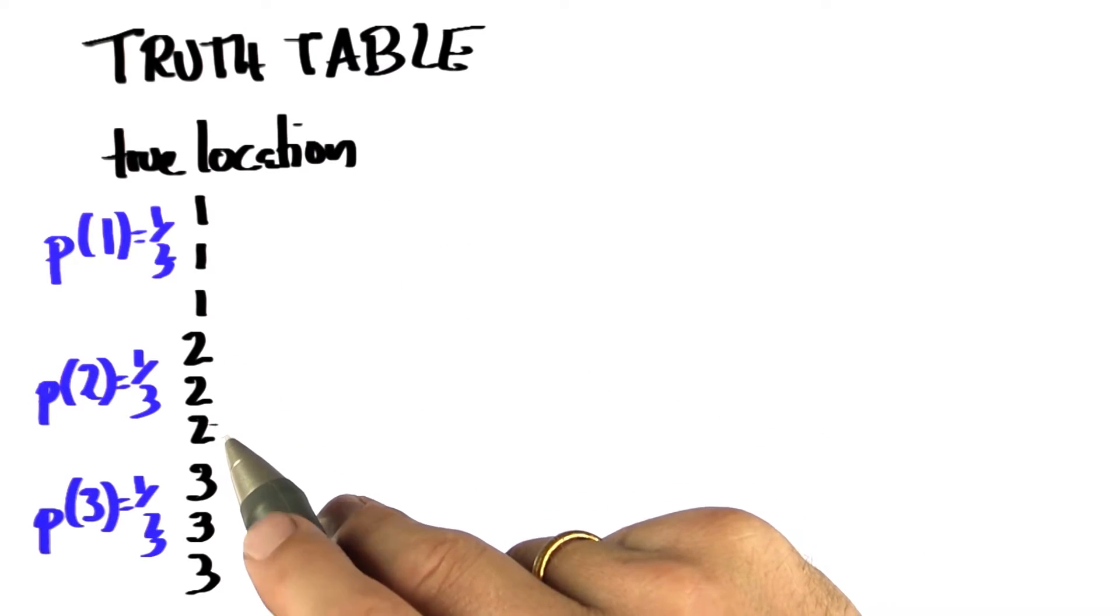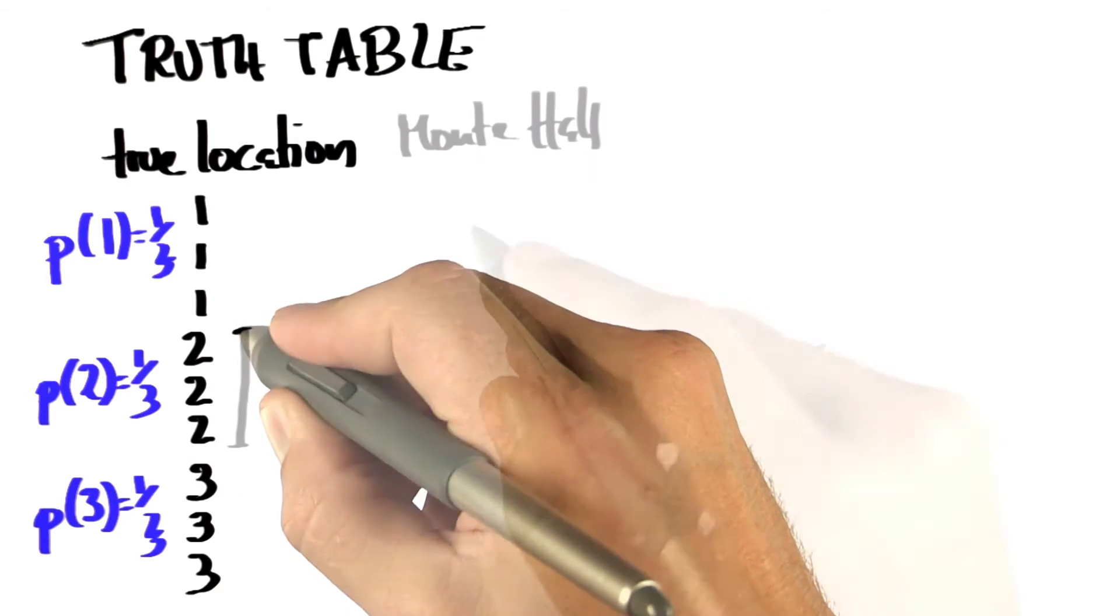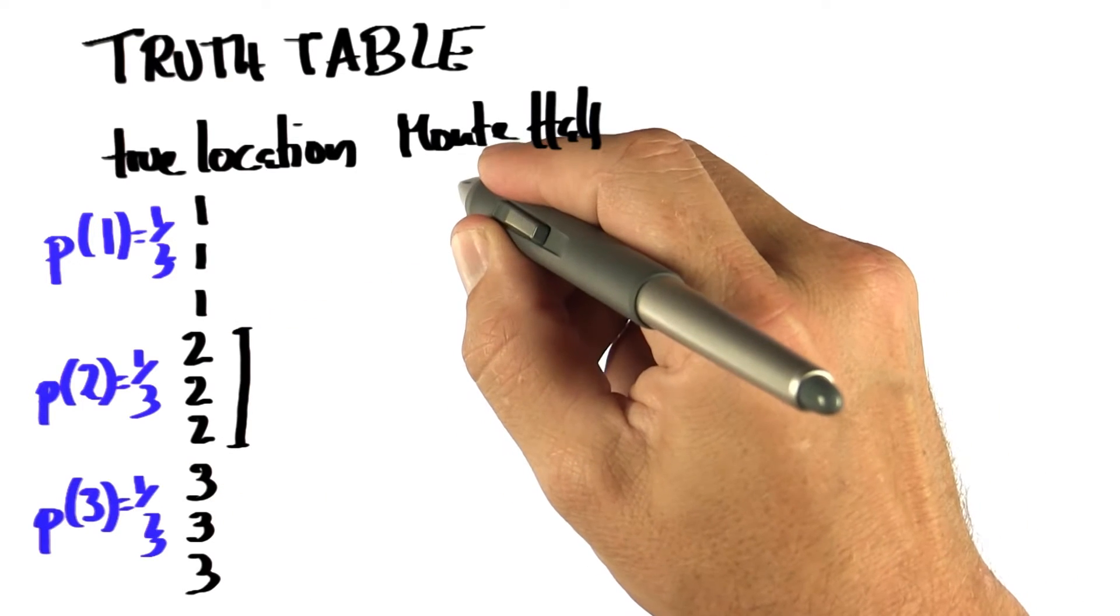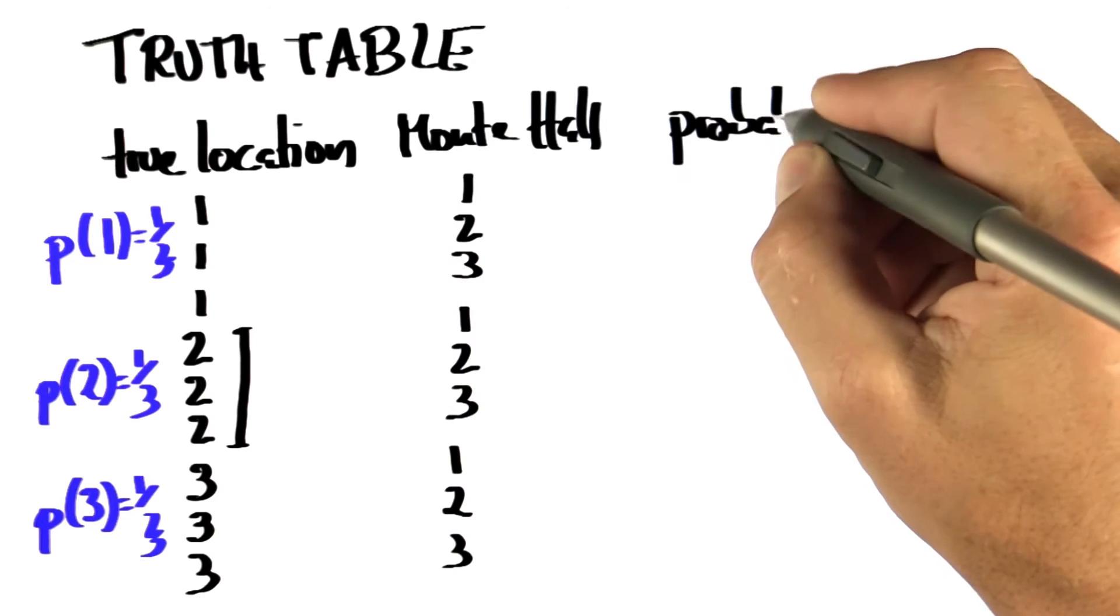Now, say we guess door number two. Then with this guess, Monty will show me an empty door. He might show me door one, two, or three.